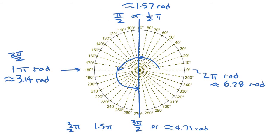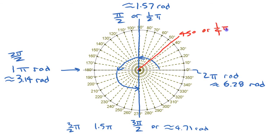Let's look at the angles right in the middle — 45 degrees. 45 degrees is going to be half as much as pi over two, so this is going to be a quarter pi, or pi divided by four. I won't worry about the decimal approximation — just go to your calculator and compute pi divided by four.